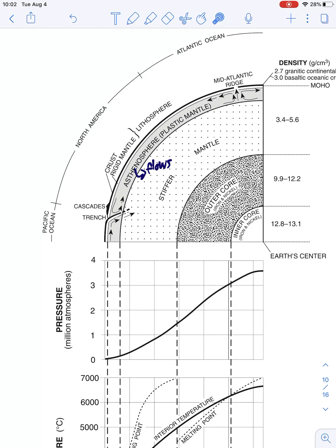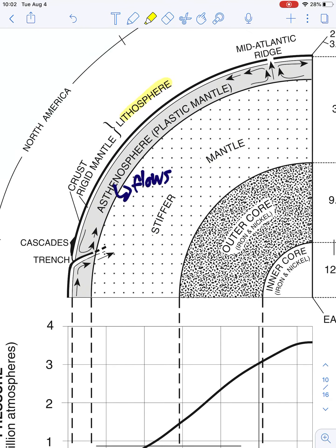Then above the asthenosphere, we have some interesting things here. I'm going to highlight just so that you can see what I'm talking about. Let me just change my color here. I have the lithosphere. Now the lithosphere, if you see, is made up of two different things. It's made up of the crust, which is the outer layer of solid rock surrounding the Earth, but then it's also made of the rigid mantle.